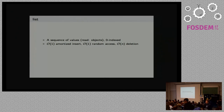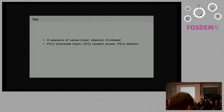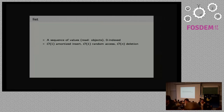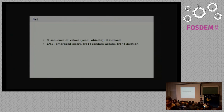So let's get started with lists. A list basically is a sequence of values. In Python, it's objects indexed starting from zero. They provide constant time insertion, random access, and linear time deletion.